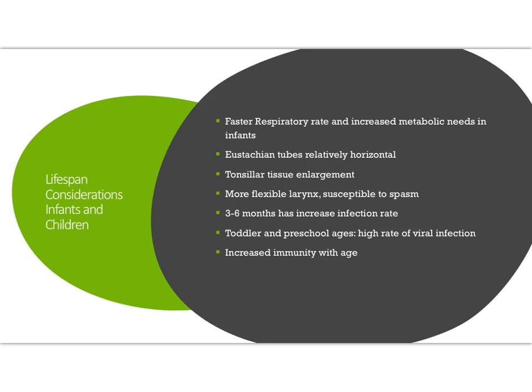For lifespan considerations reviewed from pediatrics: infants and children have a faster respiratory rate and increased metabolic need. The eustachian tube is shorter and more horizontal, leading to an increased incidence of otitis media or ear infections. Tonsils are larger, creating potential airway obstruction and increased infection risk.